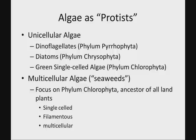For now, we're going to call them protists and look at two major groups. We're going to look at three unicellular groups: dinoflagellates (phylum Pyrophyta), the diatoms (phylum Chrysophyta), and single-celled green algae (phylum Chlorophyta). As we move into multicellular algae — what we think of as seaweeds — we'll focus on Chlorophyta because it spans both groups, including single-celled, filamentous, and multicellular versions.